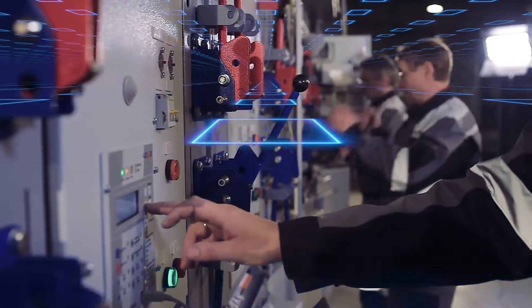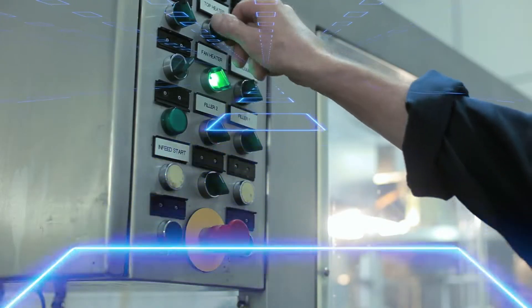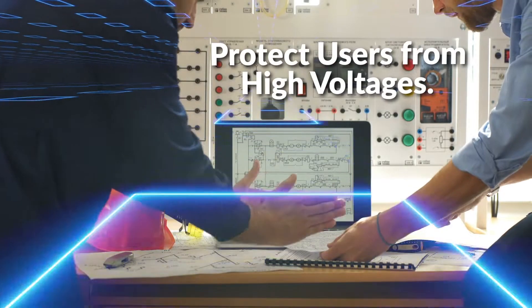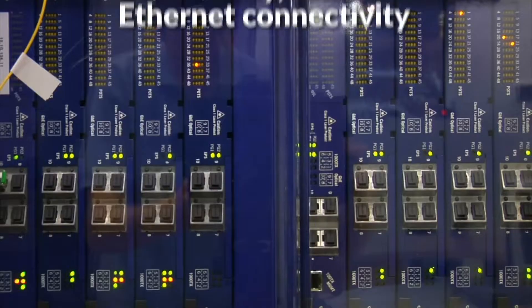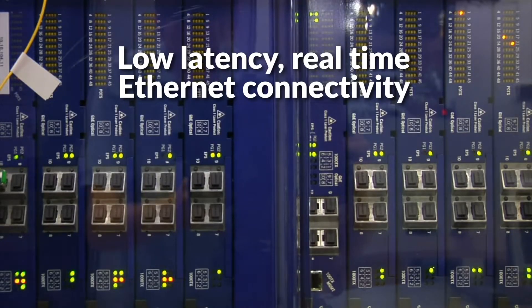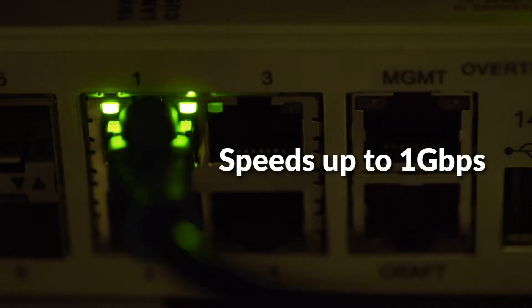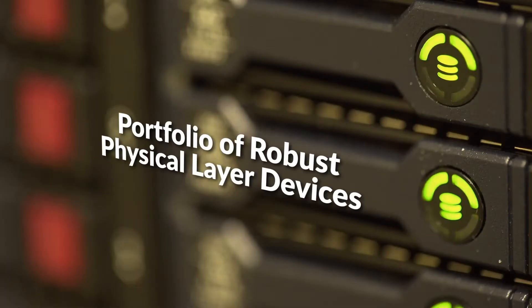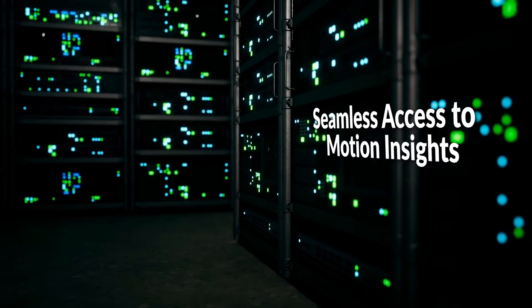Isolation and interface solutions provide data and power isolation to protect users from high voltages. Low latency real-time Ethernet connectivity with speeds up to 1 Gigabit per second is enabled by our portfolio of robust physical layer devices for seamless access to motion insights.